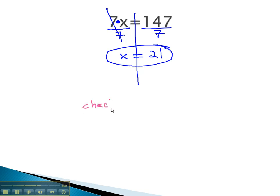We can verify this answer by checking it, replacing the x with the 21 we found. Is 7 times 21 equal to 147? Well, 7 times 2 is 14, and 7 times 1 is 7, so sure enough, we get 147 on both sides. It checks out. Our solution x equals 21 is the only number for x that makes the original equation a true equation.